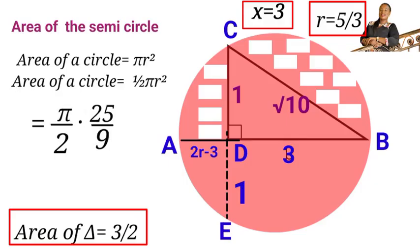We are going to have 1 over 2 times pi bracket 5 over 3 squared. So it will be equal to pi over 2 times 25 over 9. So area of the semicircle will be 25 pi over 18.